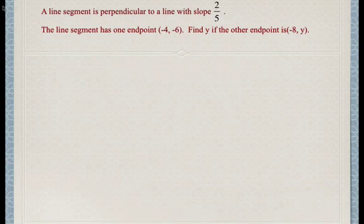In this question, we're asked to find the other endpoint of a line segment that is perpendicular to a line with slope 2 over 5. The line segment has one endpoint at negative 4, negative 6, and the other endpoint is at negative 8 and some unknown y coordinate.